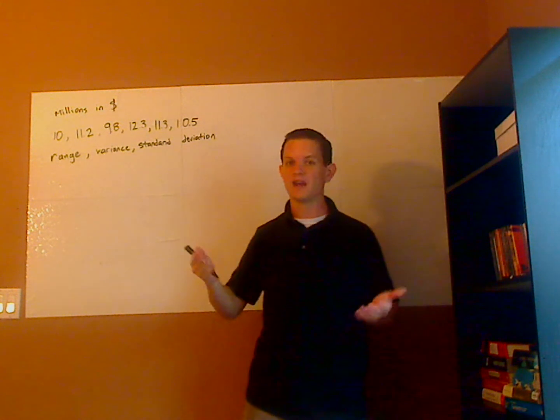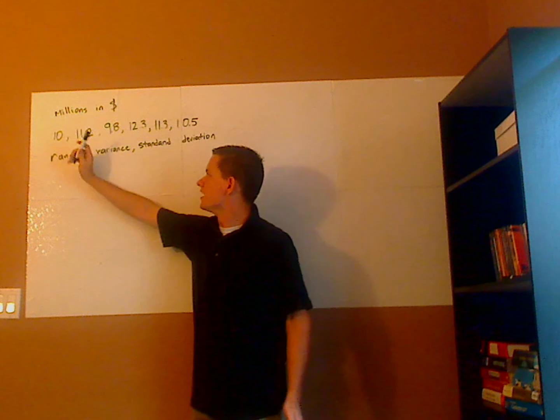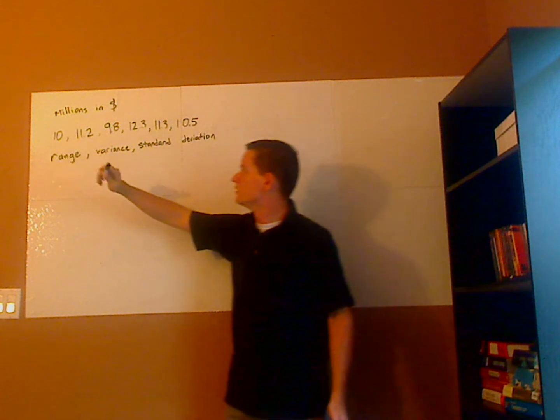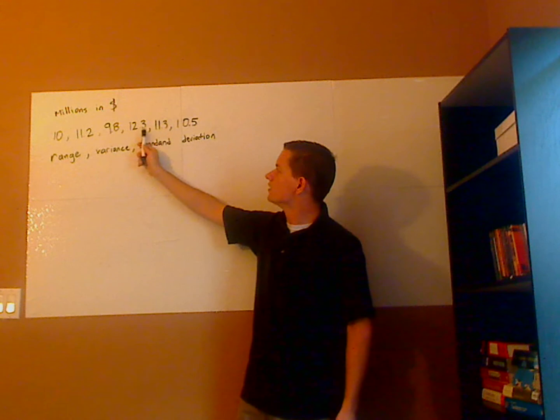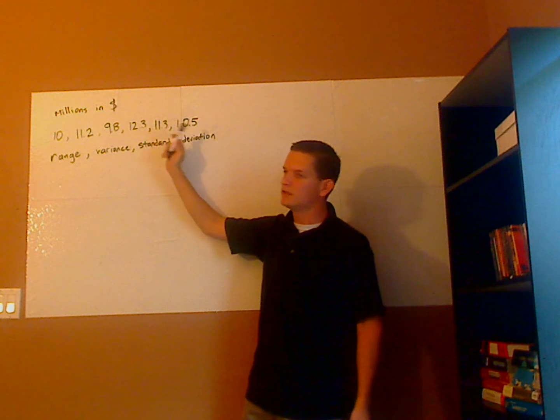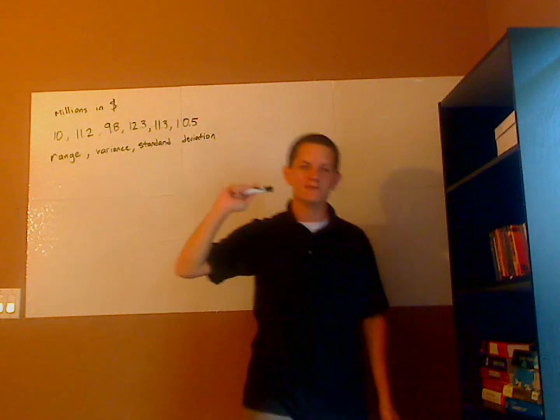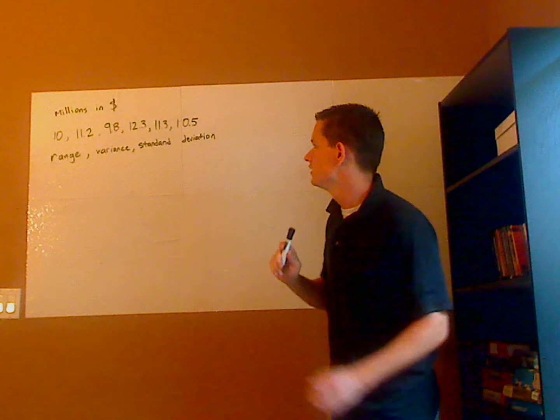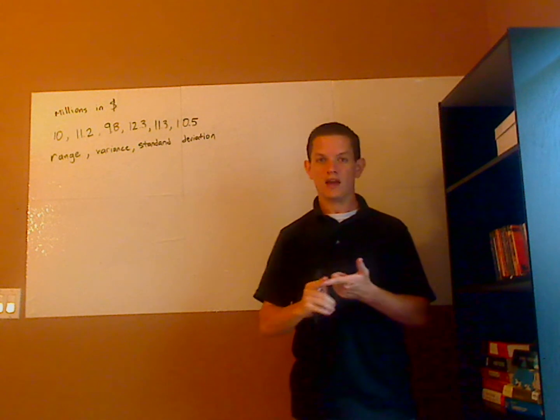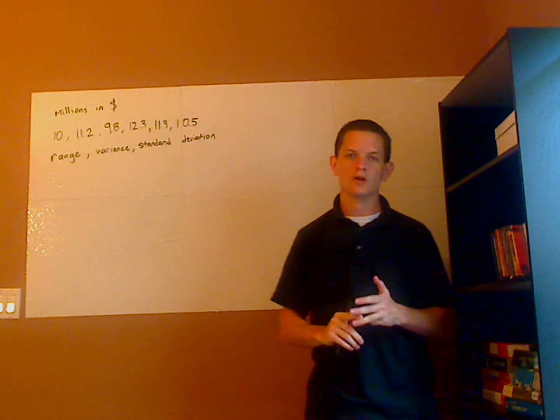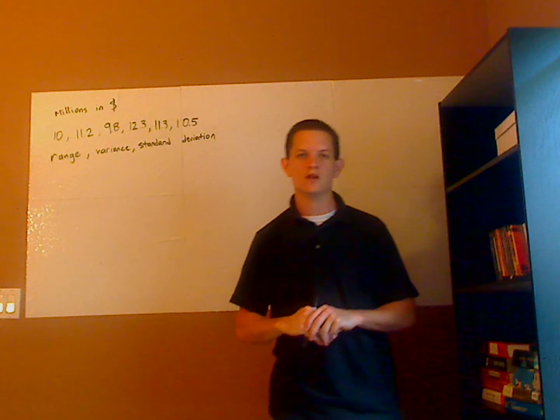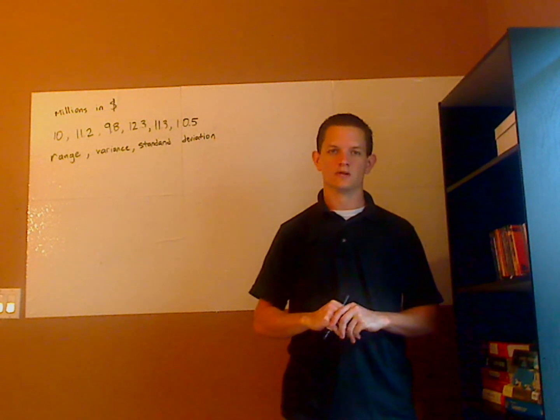Let's say from a car factory, so you have 10 million, 11.2 million, 9.8 million, 12.3 million, 11.3 million, and 10.5 million dollars. I want you to calculate the range, the variance, and the standard deviation. So if you would pause the video and see if you can try this one on your own.